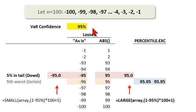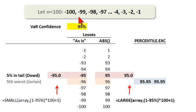Hello, this is David Harper, the Bionic Turtle, with an illustration of historical simulation and this tricky issue of how we pick the value at risk when the distribution is discrete and not continuous.